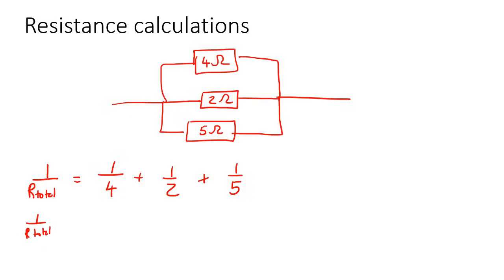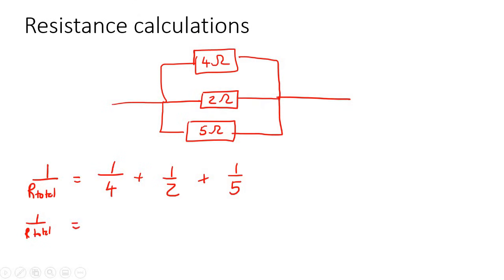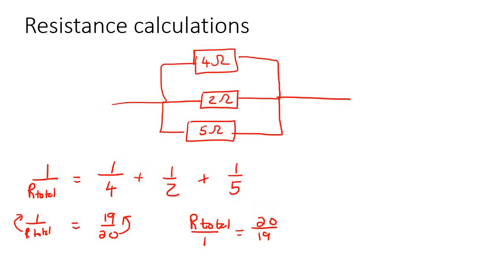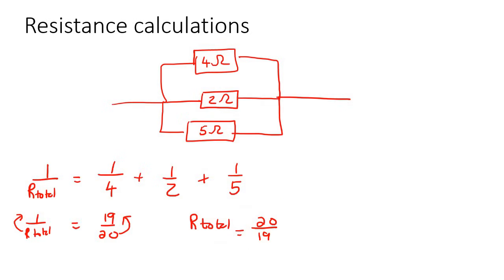To solve this, type 1 over 4 plus 1 over 2 plus 1 over 5 into your calculator — that gives 19 over 20. Then switch both fractions upside down, so on the left you get R total over 1 equals 20 over 19. Since something over 1 is just itself, R total equals 20 over 19.